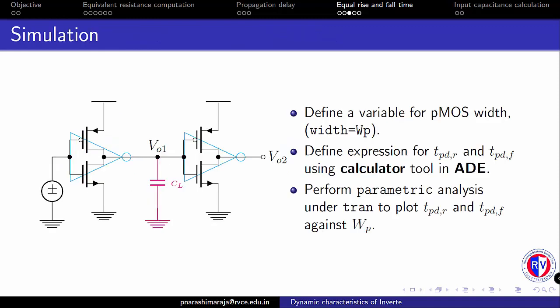In order to find the appropriate sizes for the PMOS, one needs to define a variable for the PMOS transistor's width. Later we will be using this variable to vary the width of the PMOS over a range by making use of a parametric analysis, which we will discuss later along the flow of this procedure.